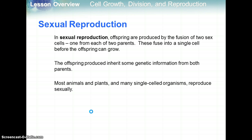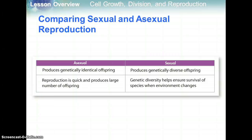Sexual reproduction: offspring are produced by the fusion of two sex cells, one from each parent — like an oocyte from a female and a sperm from a male. These fuse into a single cell before the offspring can grow. The offspring inherit some genetic information from both parents, creating a new genetic combination. Most animals, plants, and many single-celled organisms reproduce sexually. Comparing the two: asexual produces genetically identical offspring; sexual produces genetically different offspring.